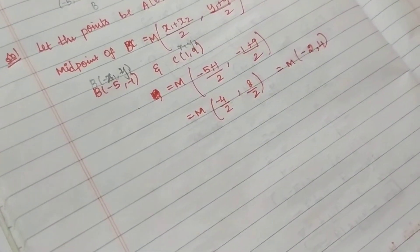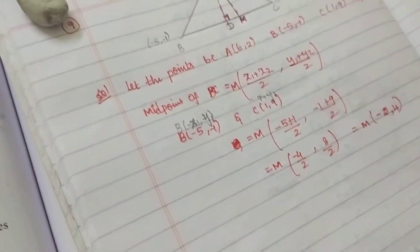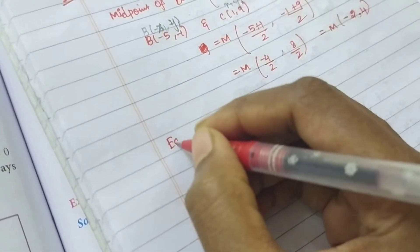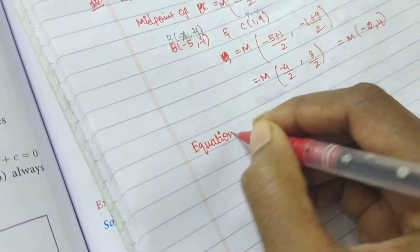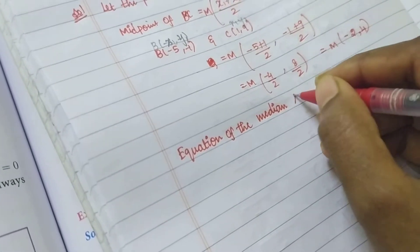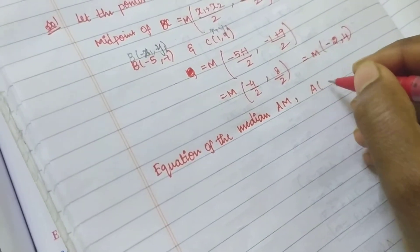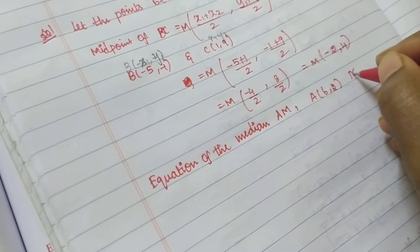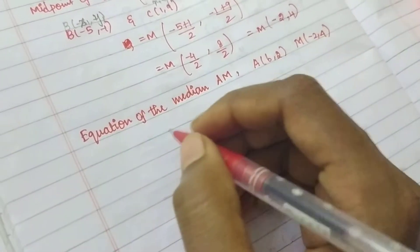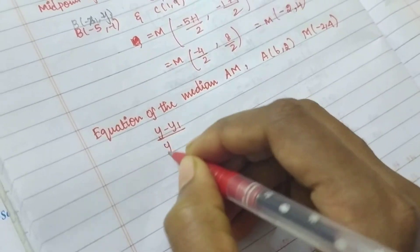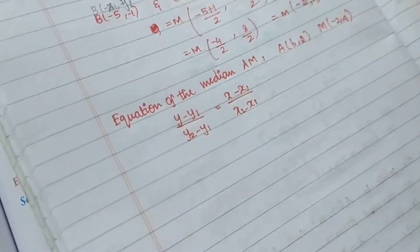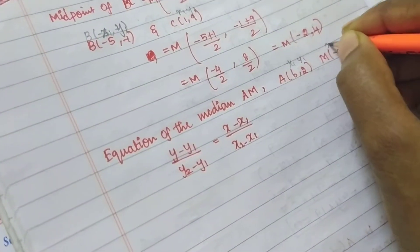The equation of the median is the line through A and M. So A value is (6, 2) and M value is (-2, 4). We are having two points. We already know the two-point formula: (y minus y1) divided by (y2 minus y1) equals (x minus x1) divided by (x2 minus x1). We know x1, y1, x2, y2.